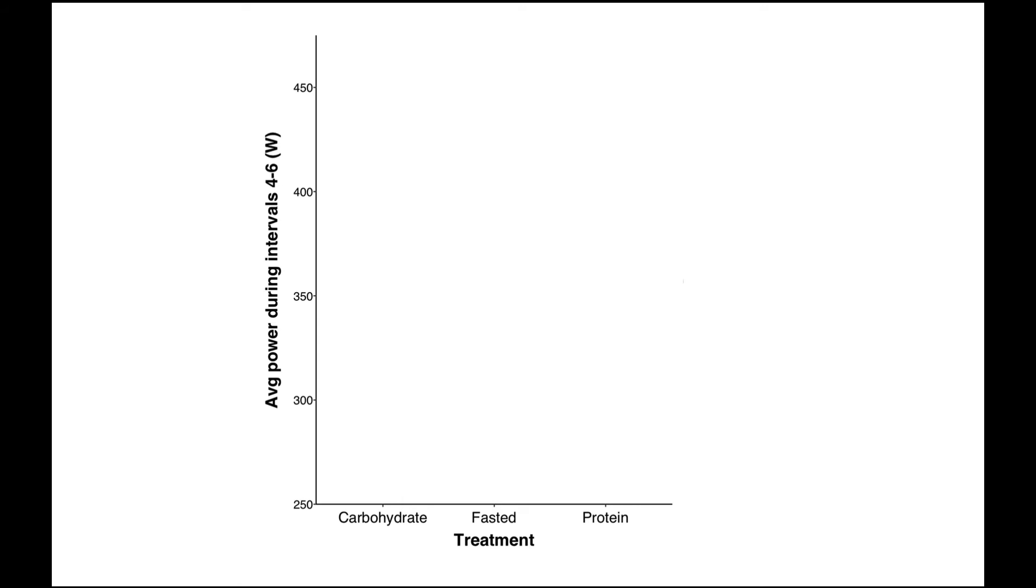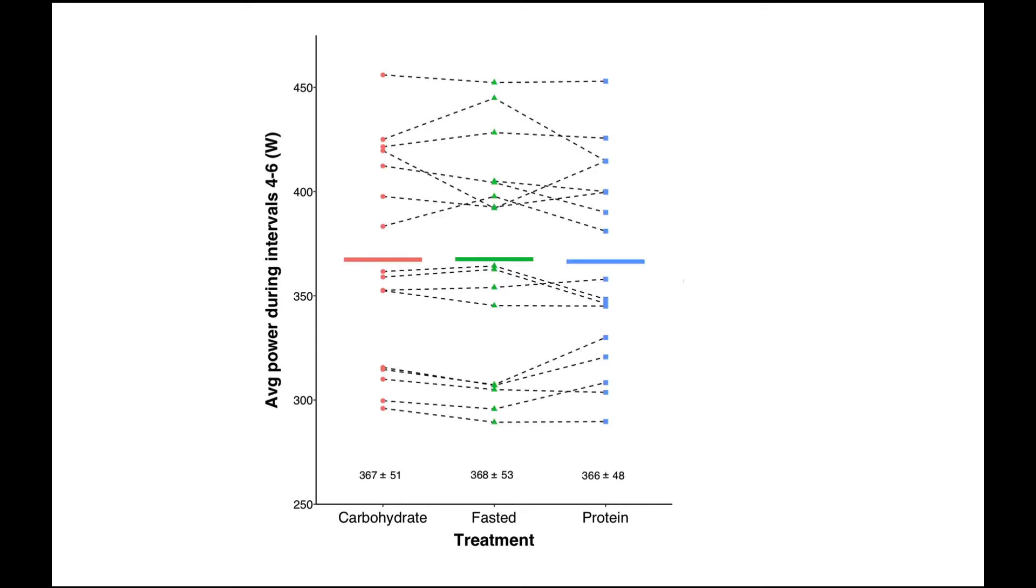Many people think that carbs will help performance in interval training, but what we found was there's actually no differences. We see the dotted lines are the individual responses and the solid lines are the average group responses, and we see that they're essentially identical, which was really quite surprising to me. Also if you're familiar with numbers and power outputs, you'll see that some of these guys in the 400 plus watts range on average for three by three minute intervals. There's a really solid group of cyclists.